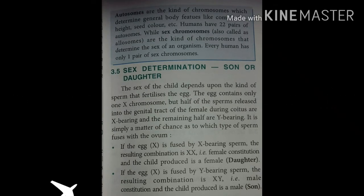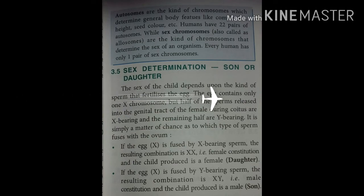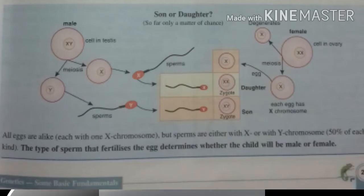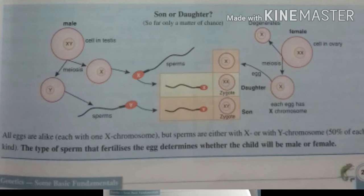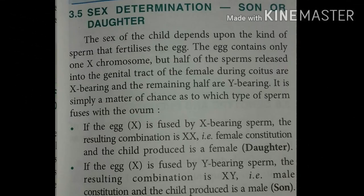Now I am talking about sex determination — son or daughter. The sex of a child depends upon the kind of sperm that fertilizes the egg. The egg contains only one X chromosome, but half of the sperm are X-bearing and the remaining half are Y-bearing. It is a matter of chance as to which type of sperm fuses with the ovum. If the egg X is fused by an X-bearing sperm, the resulting combination is XX — female — and the child is a daughter. If the egg X is fused with a Y-bearing sperm, the resulting combination is XY — male — and the child is a son.